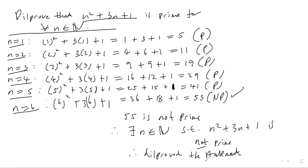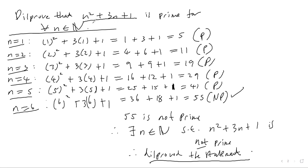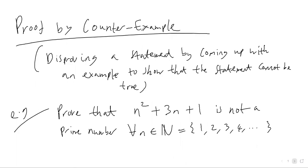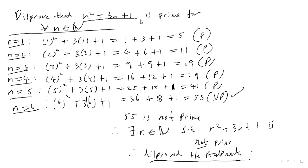Proof by counterexample is just literally when we want to come up with an example — in this case an n value — which gives us a result that contradicts what we're trying to prove. We wanted to disprove that this is prime for every natural number, and by finding a natural number that makes it not prime, we've disproved the statement. That's an example of proof by counterexample, and it doesn't really get much more tricky than that.